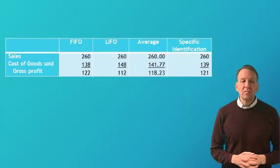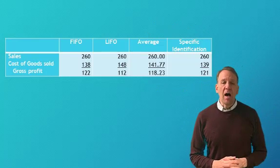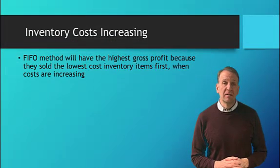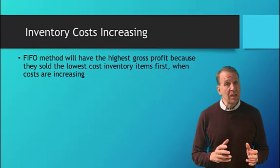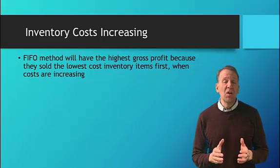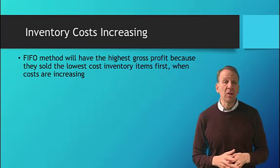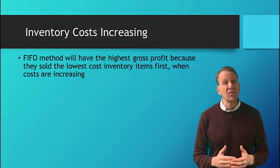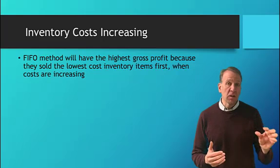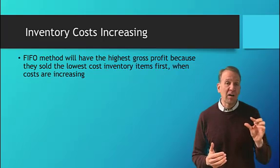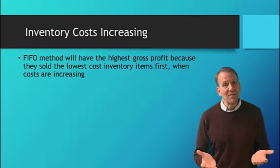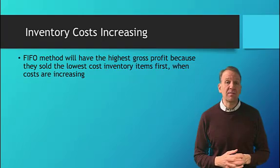So, when inventory costs are increasing, FIFO will always calculate the highest gross profit. You really need to think about this — it's because we're selling the lowest cost inventory items first, first in, first out. If prices are increasing, then we're selling the lowest priced ones, so cost of goods sold will be the lowest amount. So then gross profit, obviously, will be the highest under FIFO.